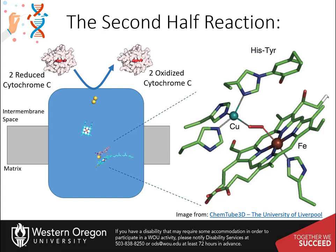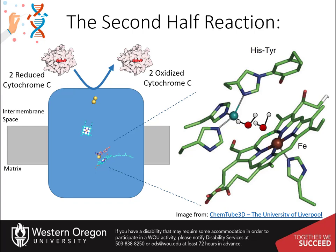In the second half of the reaction, two more cytochrome C molecules drop off two more electrons to the catalytic center. This causes the pumping of two more protons to the inner membrane space. It also allows the breaking of the peroxide bond and the formation of the hydroxyl copper and hydroxyl iron intermediates. The metal-oxygen linkages are unstable and the electrons will pick up two more protons from the matrix of the mitochondria to complete the formation of two water molecules. This completes one round of enzymatic activity by complex IV.